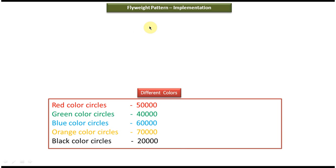Suppose in my application I want to create 50,000 red color circles, 40,000 green color circles, 60,000 blue color circles, 70,000 orange color circles, and 20,000 black color circles. So around 3 lakhs circle objects I have to create.